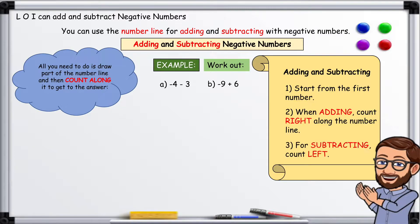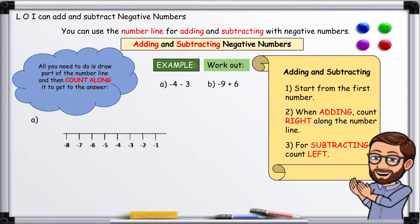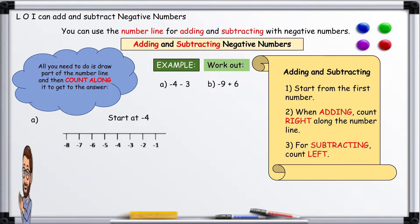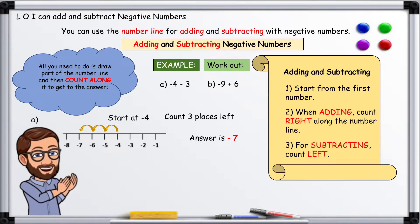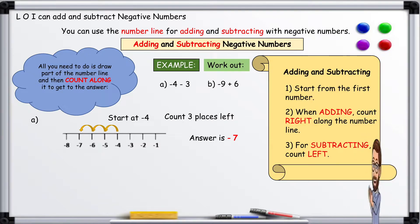Start at -4, count three places left: one, two, three. Our answer is -7.